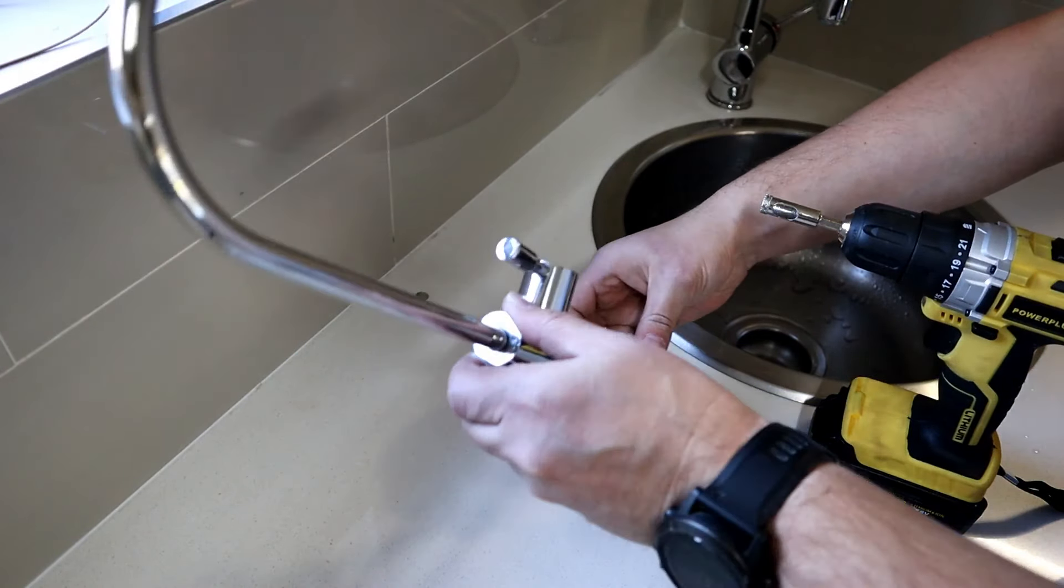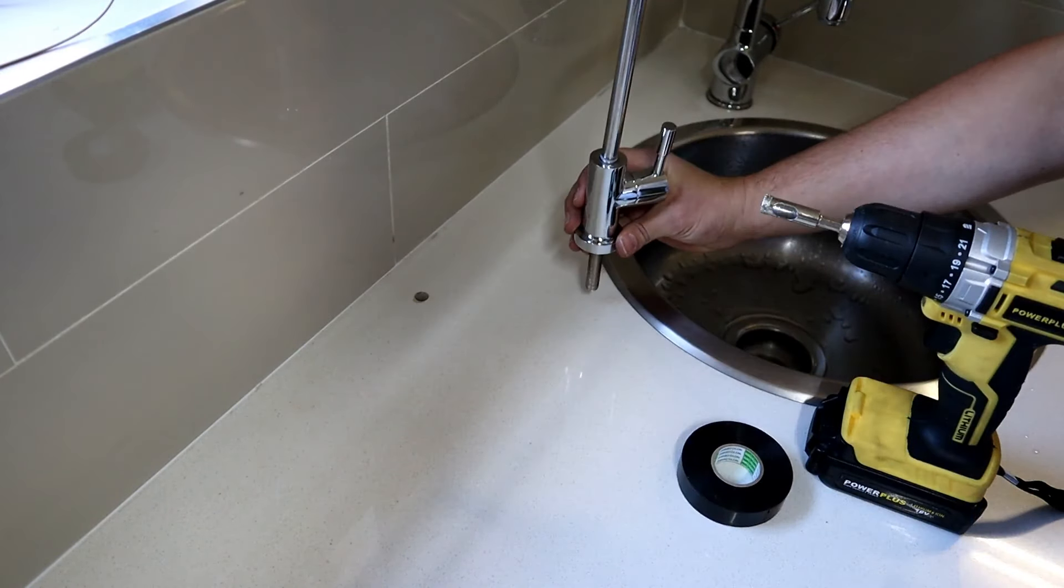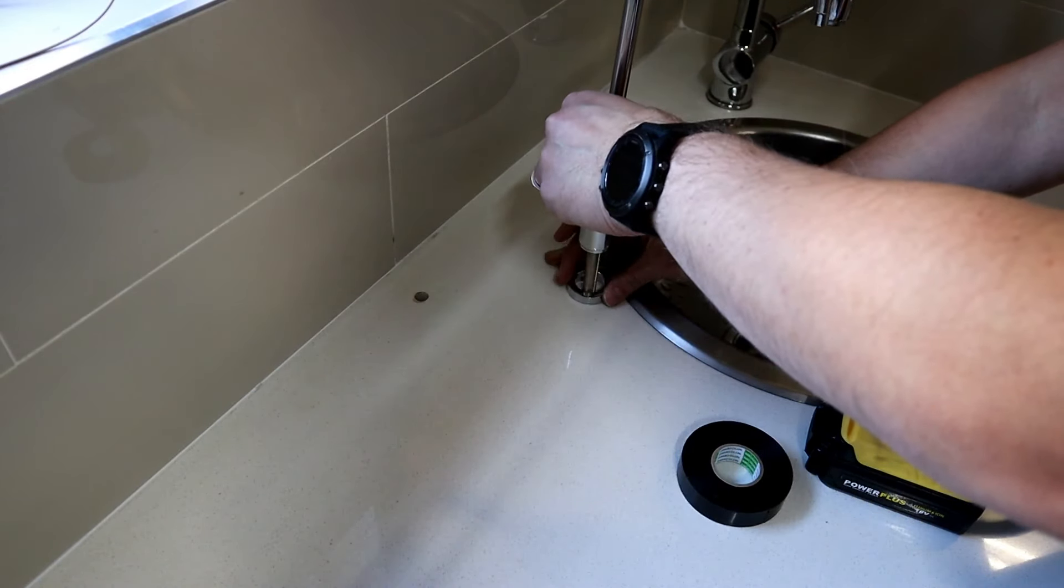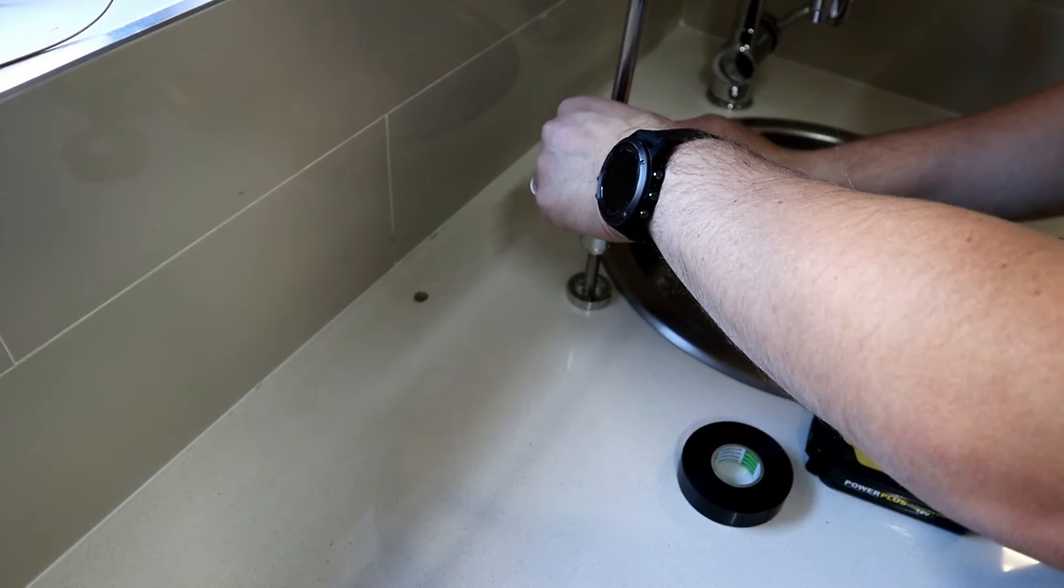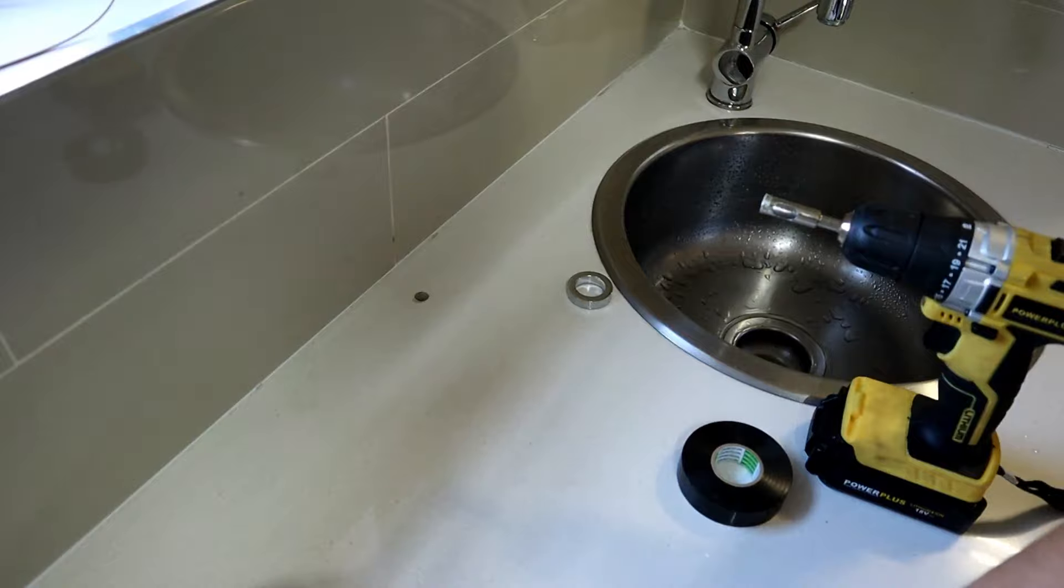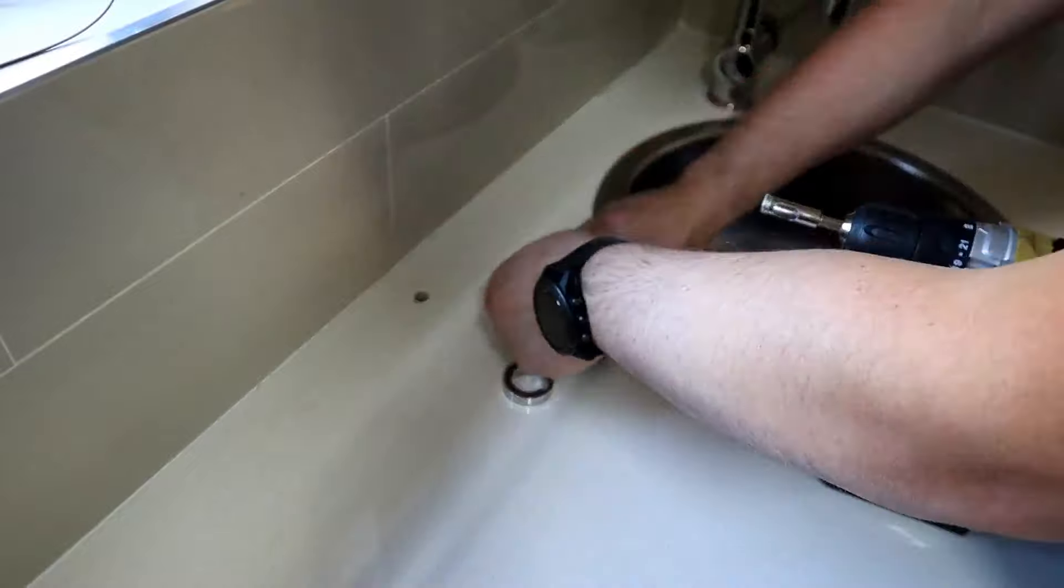So first things first, we need to decide where we actually want to place the tap. Put it together, have a look, see where it's going to fit in and where you actually would want the tap, and then have a look underneath. It's very important to make sure that you've actually got enough space to place the fitting and that where you start drilling the hole you'll be able to secure it.